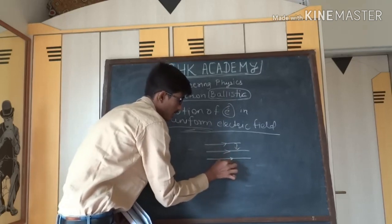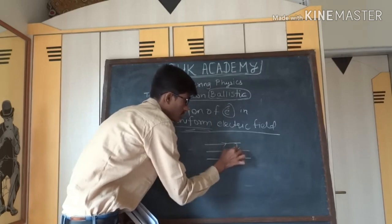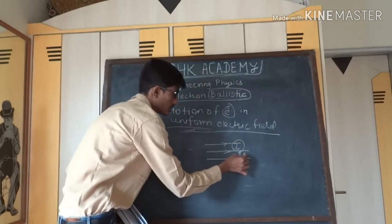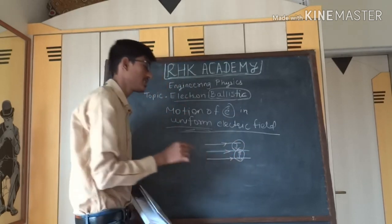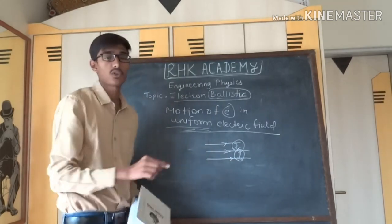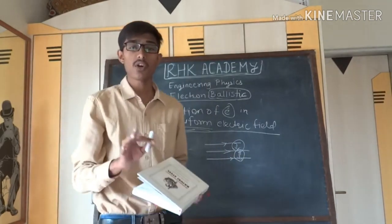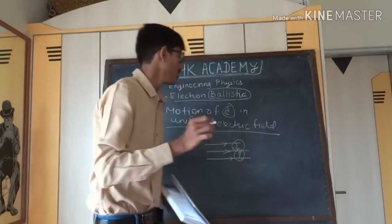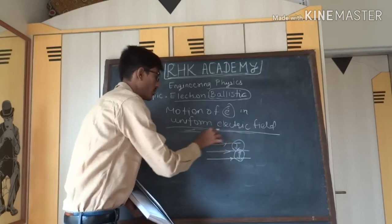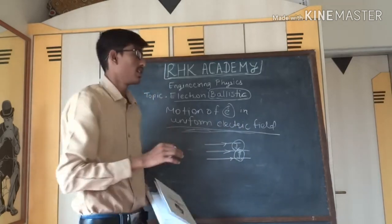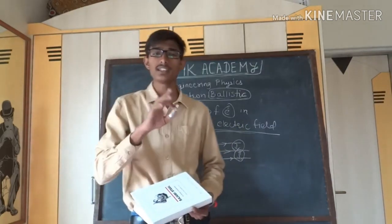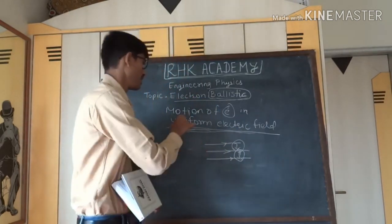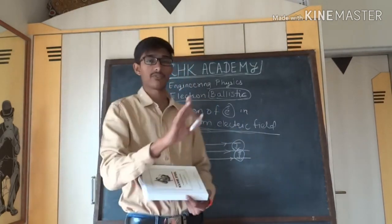The field lines must be straight lines and equally spaced. The distance between any two adjacent electric field lines must be the same for a uniform electric field. Now we have understood what is meant by uniform electric field, and we will discuss the motion of the electron in a uniform electric field.